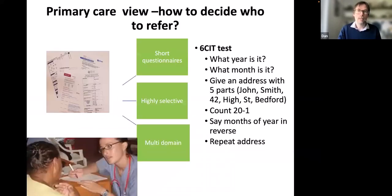And we'll just define that a bit more. So this is what the six CIT is that the GP does. It's relatively short. It has some reasonable sensitivity and specificity. But what you find in clinical practice is that we see people who don't have dementia, who have anxiety or depression, who will fail this test and get referred to us when they could be referred elsewhere.